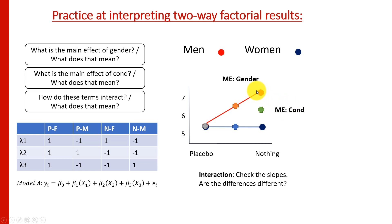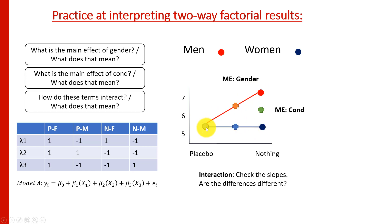This raises an important point: the interaction trumps the main effects — it supersedes them. Main effects tell us what's happening on average: on average, men had higher thermal pain ratings than women; on average, the placebo group had lower thermal pain scores than the nothing group. But the interaction tells us we shouldn't look at these things on average, because the effect of the placebo really depends on whether you were a man or a woman. Main effects are the effect of one factor averaged across levels of another factor; interactions tell us if the effect of one variable depends on the level of another variable.